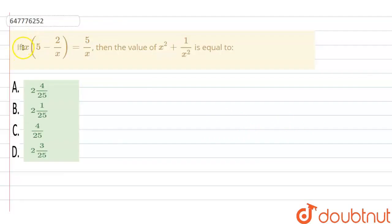Hello guys, so the question is: if x bracket 5 minus 2 upon x is equal to 5 upon x, then the value of x square plus 1 upon x square, right?